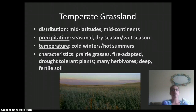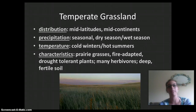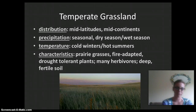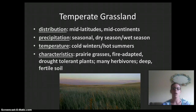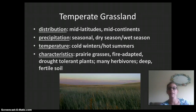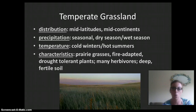The temperate grassland is like the midwestern United States — think of Kansas. Its distribution is mid-latitudes in the mid-continents. Precipitation is seasonal, with a dry season as well as a wet season. Temperature brings cold winters and hot summers. The main characteristic is grass — prairie grasses that are fire adapted and drought tolerant. In case of drought and long periods without water, these plants can survive. There are many herbivores eating these grasses, and the soil is deep and fertile to hold the grasses in place.